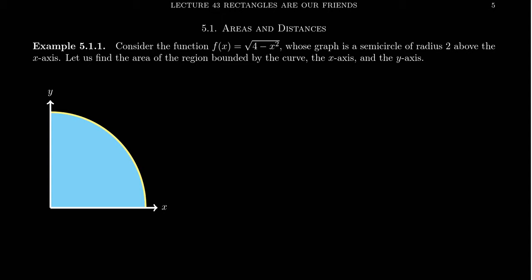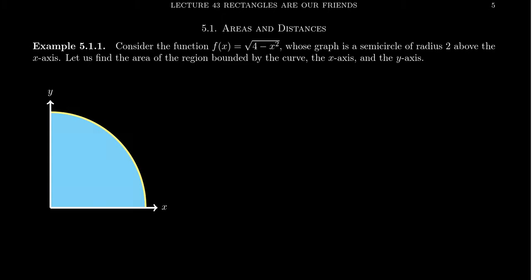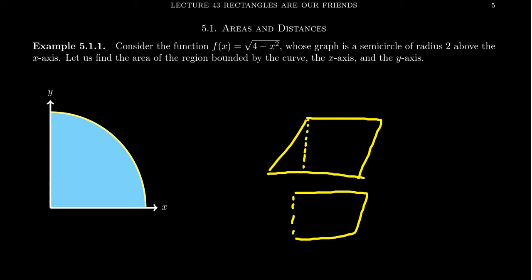The easiest shape to compute the area of is a rectangle, because the area is just length times width. The area of a parallelogram can be computed similarly by dissecting the polygon and rearranging it into a rectangle.